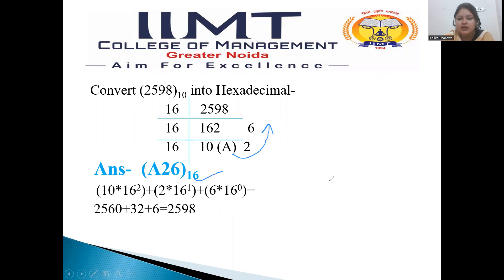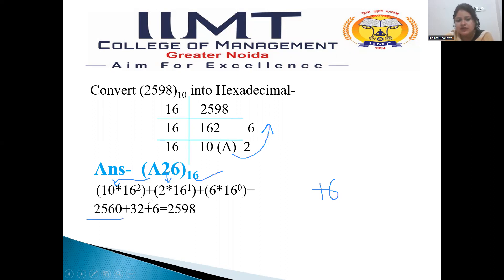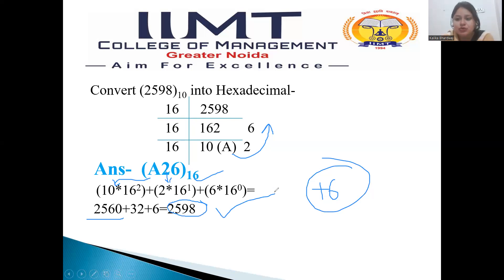We can also verify by converting back to decimal: 6 into 16 to the power 0 is 6; 10 (written as A but used as 10 numerically when converting to decimal) into 16 to the power 1 is 32 — wait, that's 2 into 16, which is 32; and 16 to the power 2 is 256 multiplied by 10 gives 2560. Adding 6 plus 32 plus 2560 gives 2598. The answer is 2598.